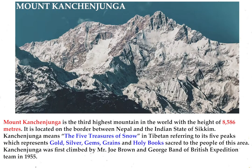Mount Kangchenjunga is the third highest mountain in the world, with a height of 8,586 meters. It is located on the border between Nepal and the Indian state of Sikkim. Kangchenjunga means the five treasures of snow in Tibetan, referring to its five peaks which represent gold, silver, gems, grains, and holy books sacred to the people of this area. Kangchenjunga was first climbed by Joe Brown and George Band of a British expedition team in 1955.